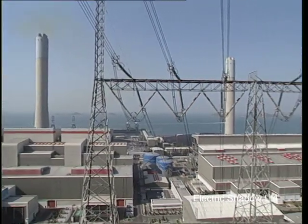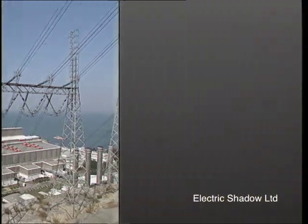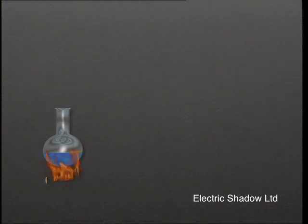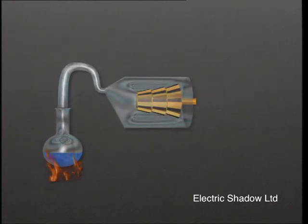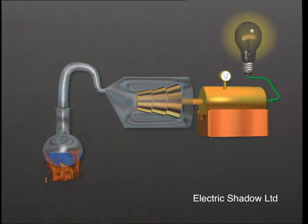Power stations use heat to produce electricity. The traditional way of obtaining the heat is by burning oil or coal. The heat boils water which produces steam. This steam is used to turn a turbine which is connected to a generator to produce electricity.